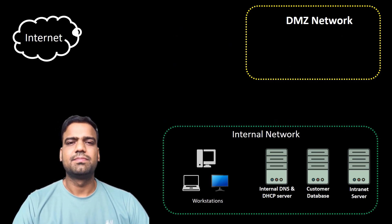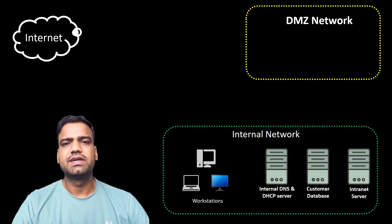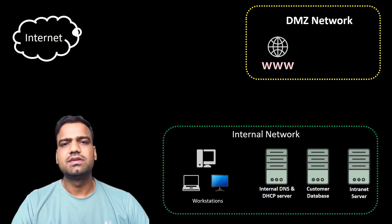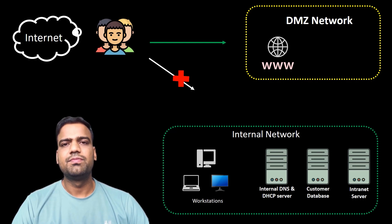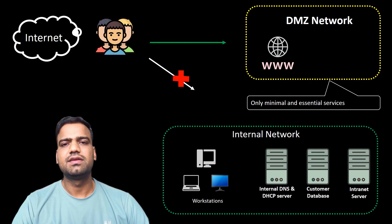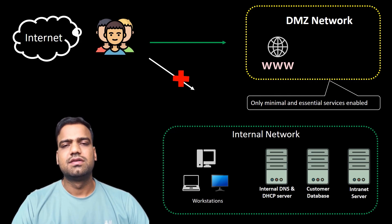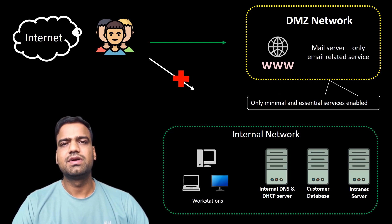Let's take an example. Suppose a company's website is hosted on a web server in the DMZ, which allows external users to browse and interact without compromising internal systems. Devices in the DMZ are configured to have minimal and necessary functionalities to reduce potential vulnerabilities. For example, an email server in the DMZ might only have essential email-related services enabled, minimizing the attack surface.